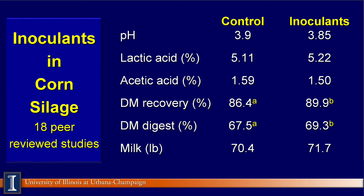A quick review of research with corn silage from 18 peer-reviewed studies by Washington State University scientists: the major statistically significant differences are a 3% improvement in dry matter recovery — meaning a producer needs 3% fewer acres, so instead of 100 acres of corn silage, 97 will give the same amount of feed — and nearly a 2% improvement in dry matter digestibility, meaning more digestible nutrients were not used up by bacteria during fermentation. The milk number was not statistically significant but trended in the right direction.